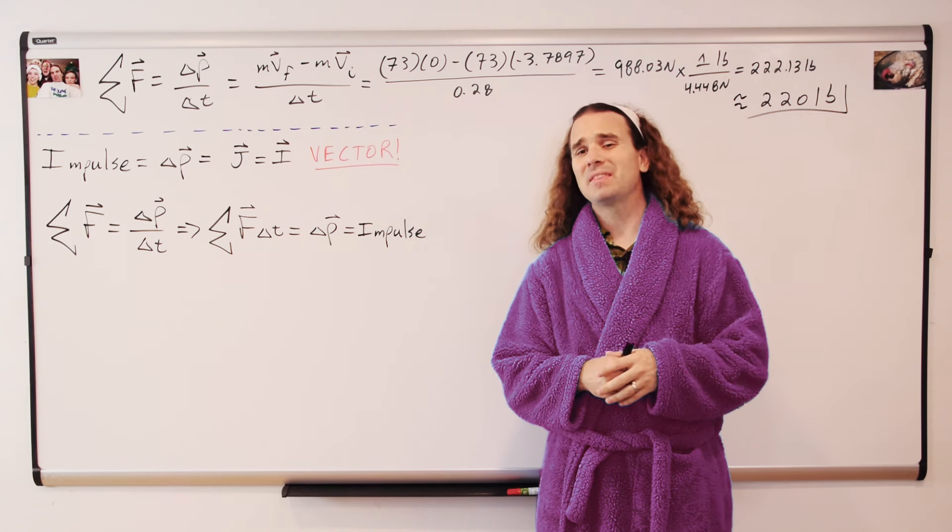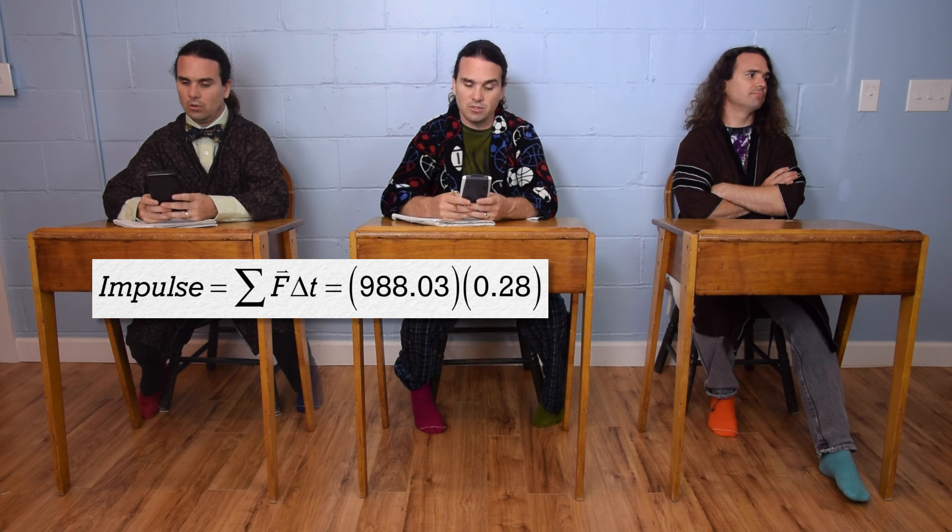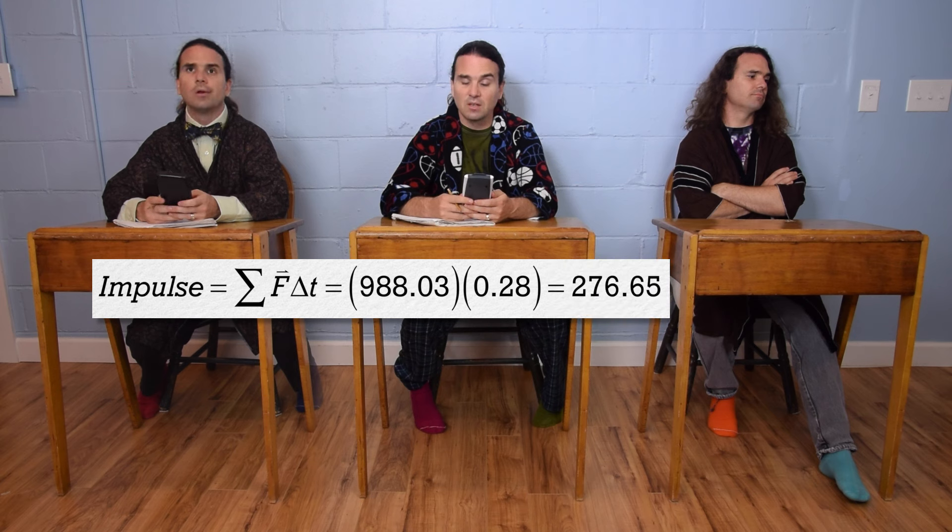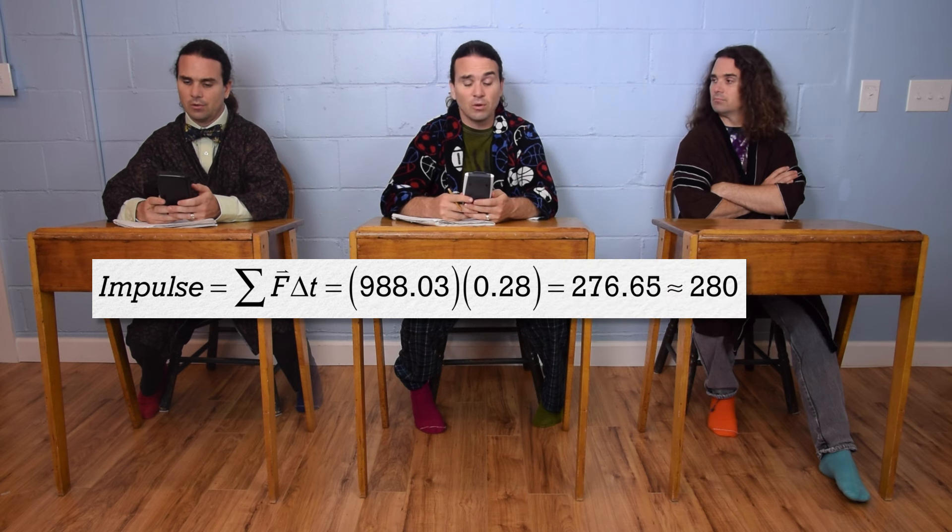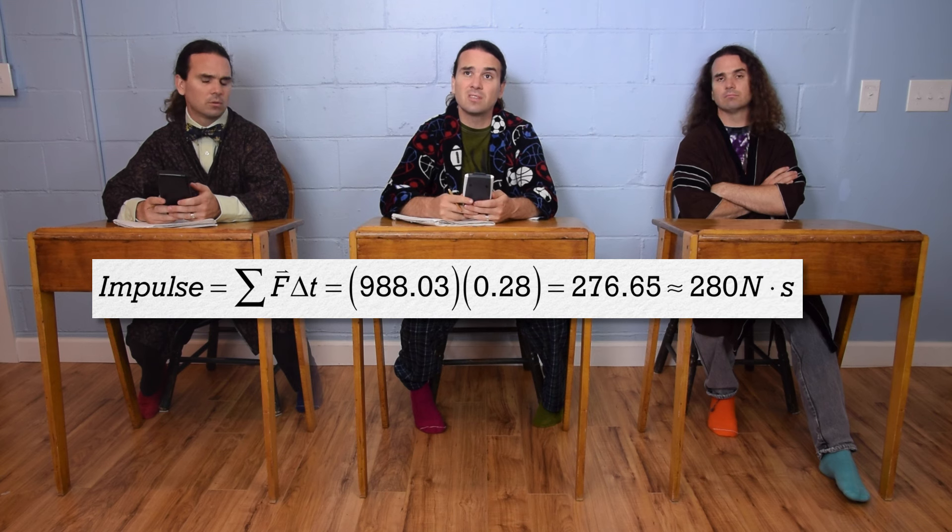Bobby, please determine the impulse during this collision. Impulse equals net force times change in time, so it's 988.03 times 0.28, which is 276.65 or 280 with two significant digits. And the units are newtons times second.